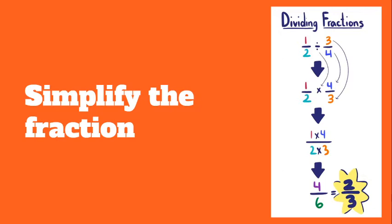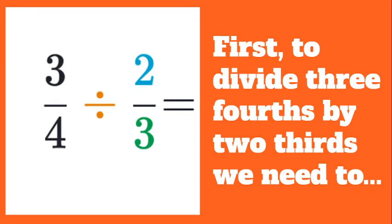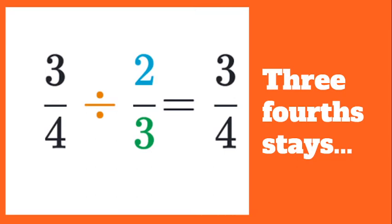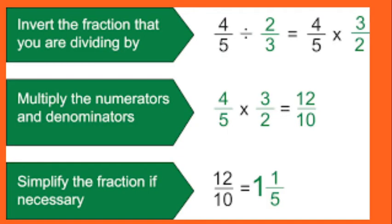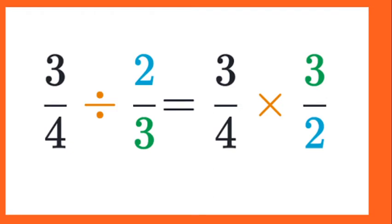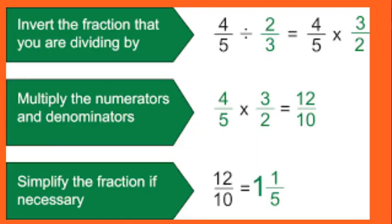Let's look at this next example. Try to fill in the blank with the sentence prompt on screen. If we have three fourths divided by two thirds, what do we do first? Hopefully you said: keep the first fraction — three fourths stays the same. Then we multiply by the reciprocal: switch two thirds to three halves. Three times three is nine and two times four is eight, so nine eighths is our improper fraction answer, which is also one and one eighth.